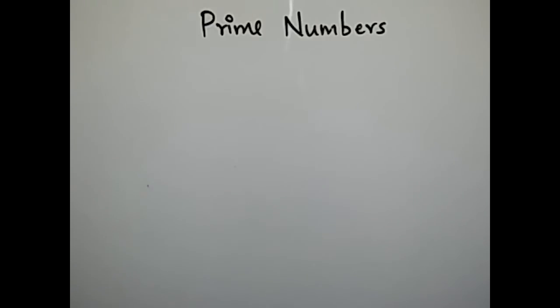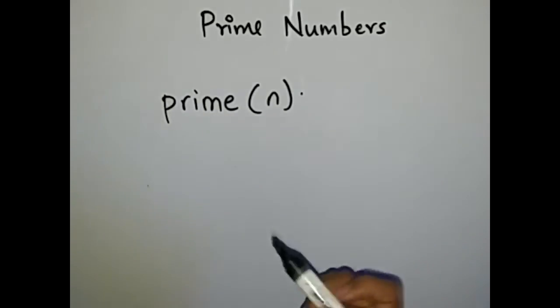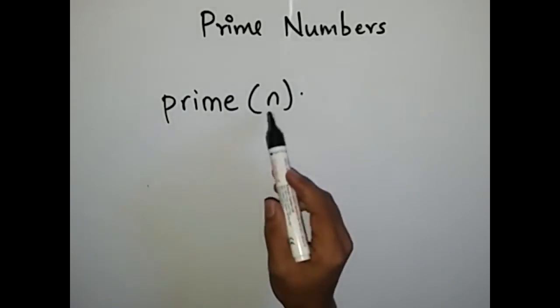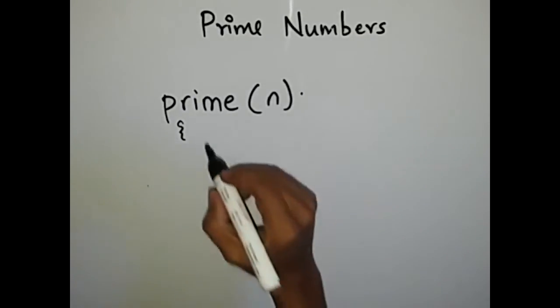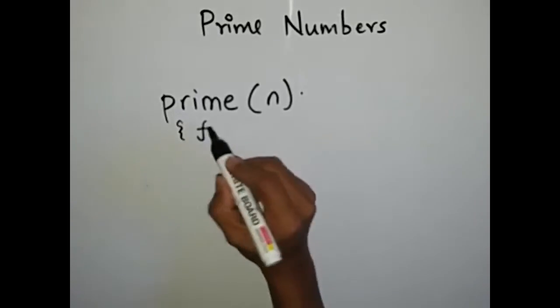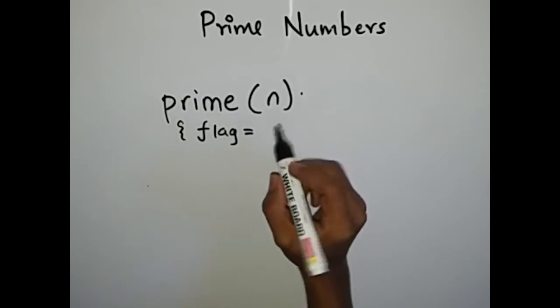How to generate and check whether the given number is prime number or not. Now to do so we will write a function. This is a function prime which takes an input as n. We have to check whether n is a prime number or not. So what we will do is take a variable flag and set it to 1.